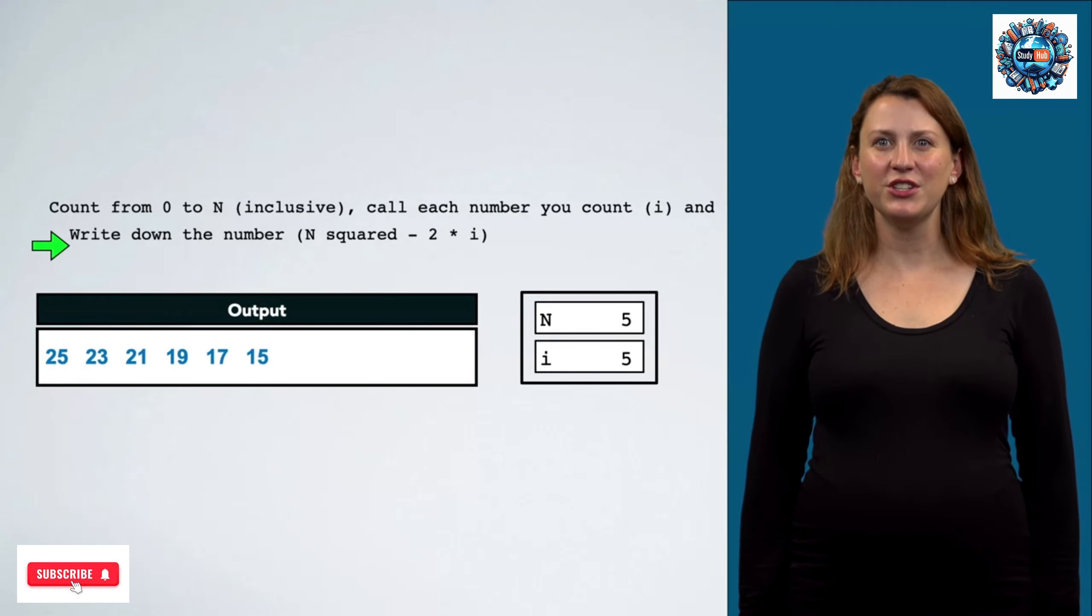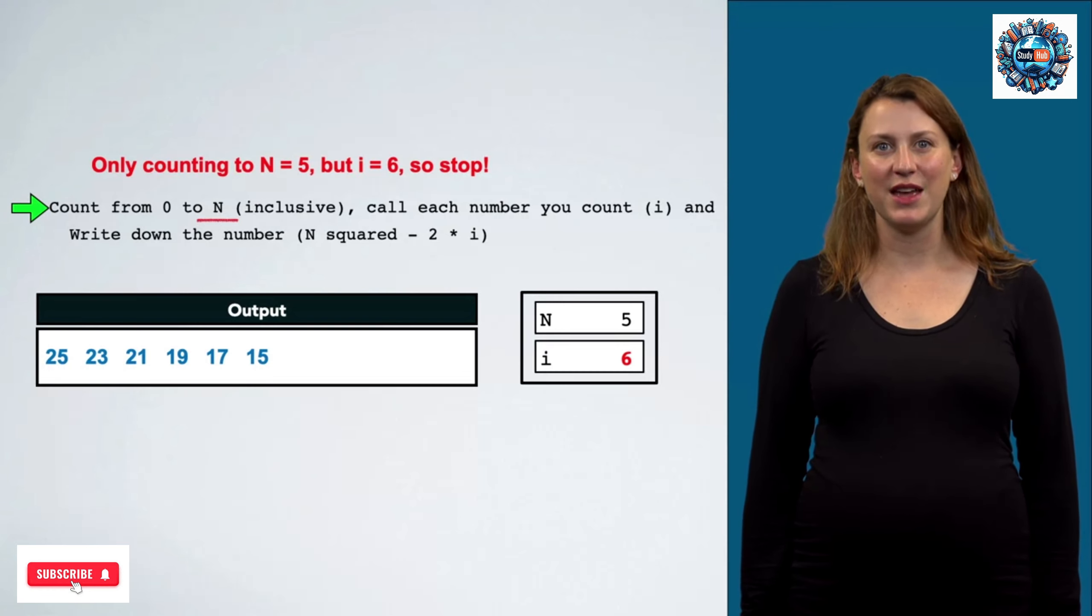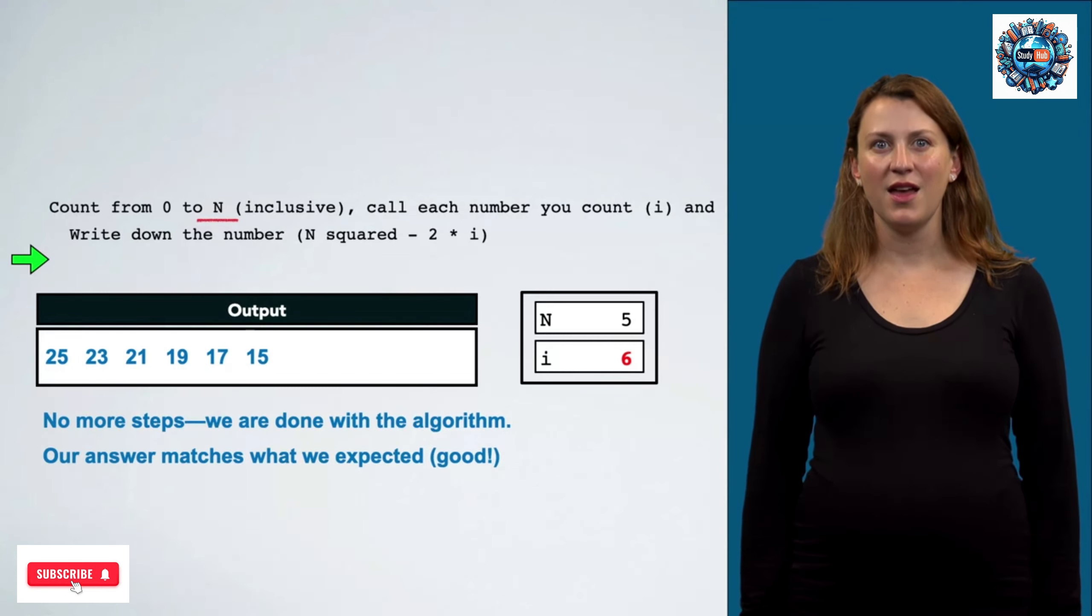i keeps getting larger each time we step through our algorithm. When i is 6, however, we're going to stop because we're only counting up to n equals 5. At this point, we finished the entire algorithm. And the good news is that our answer matches what we were expecting. The sequence of numbers is in fact what we were hoping to produce.